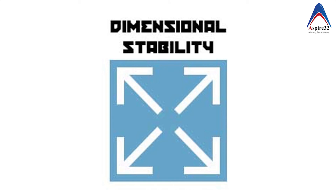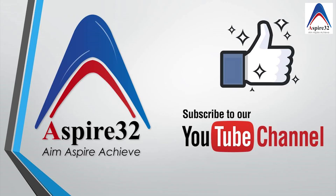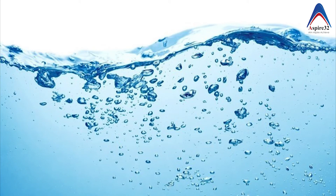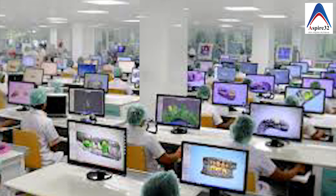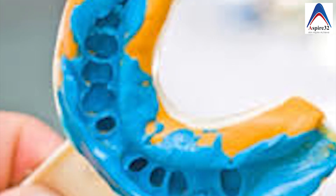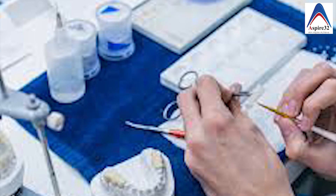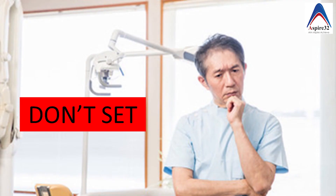The next important property is dimensional stability. Unfortunately, alginate is not dimensionally stable, and that's why you should pour it as soon as possible. Since alginate has a large amount of water in its structure, it can absorb water if kept under water or in a moist environment — a property called imbibition — or it may also lose water, which is called syneresis, causing it to shrink. This also means you cannot send the impression to the lab without pouring it, which is possible with addition silicone because that material has dimensional stability for days. Also note that unused alginate powder should always be stored in a cool dry place, otherwise it will depolymerize and won't set when used.